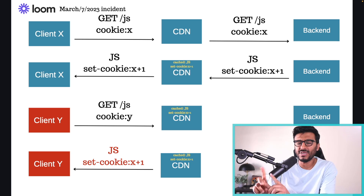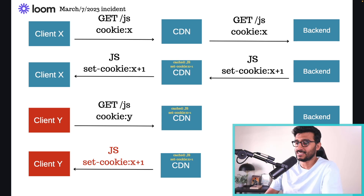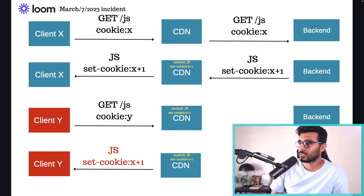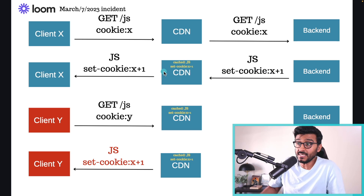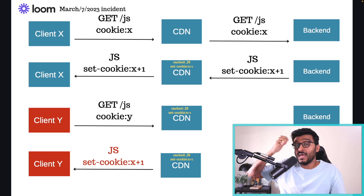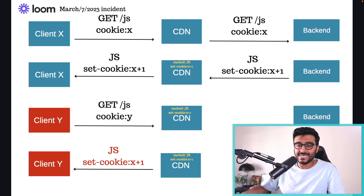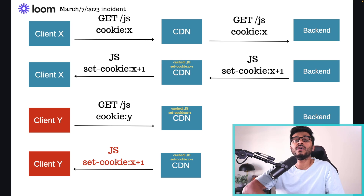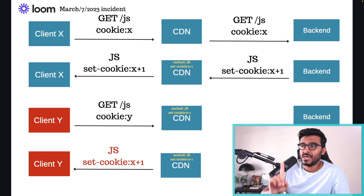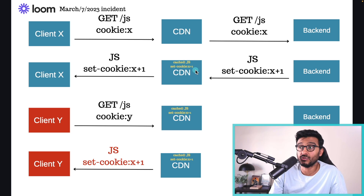Setting Set-Cookie should only happen for API requests, not for static resources like JavaScript and CSS. When you set Set-Cookie with a new expiration, the CDN caches not just the response body — the JavaScript itself — but also the response headers, including the Set-Cookie header. The Set-Cookie header overrides the browser's existing cookie with the new one; the browser always updates its cookie when it sees this header.